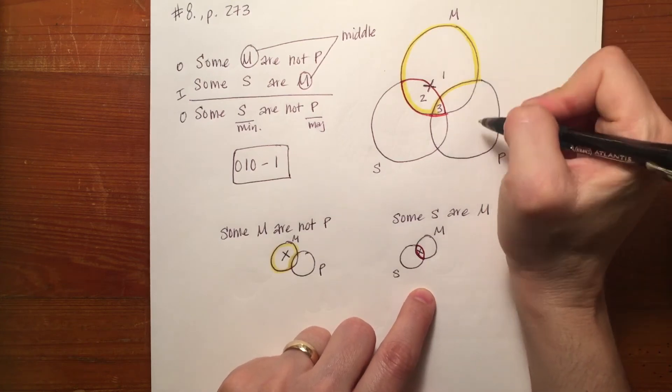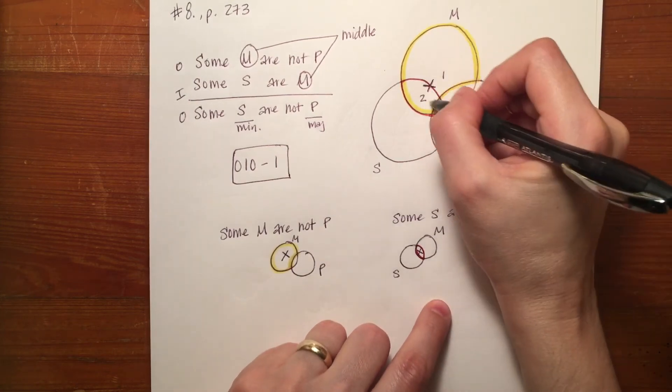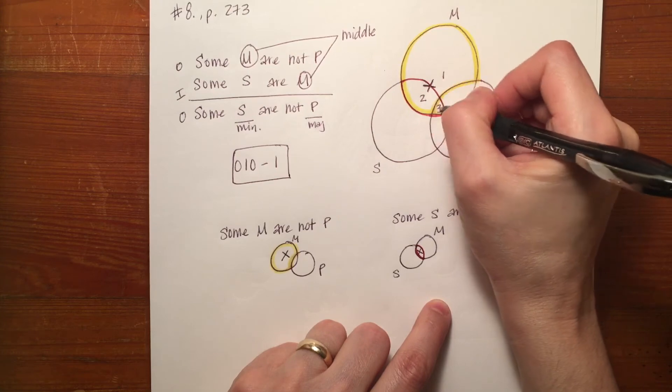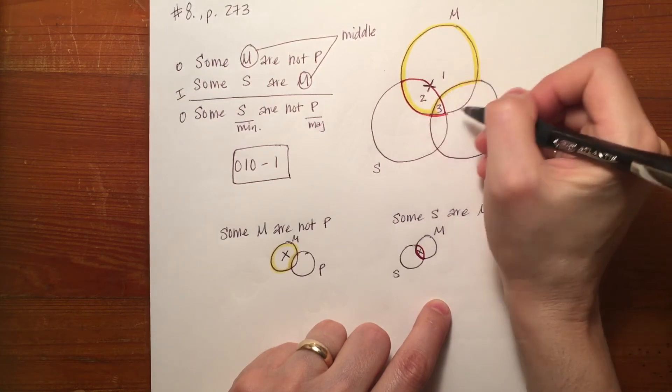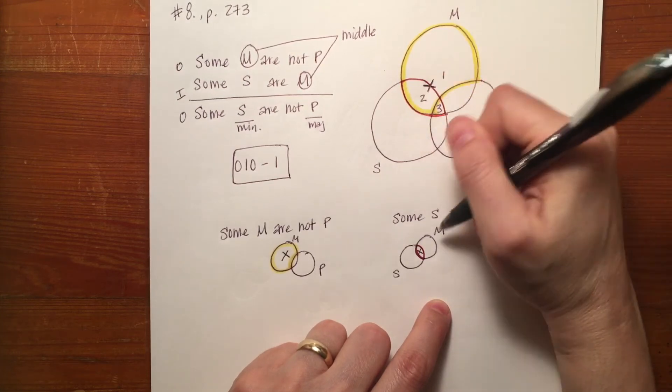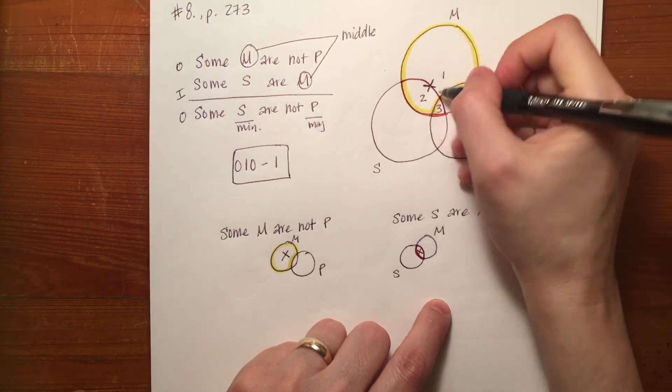So this other P circle isn't important. So what I'm going to do is, because both of these are not shaded, they're open areas two and three in the red area representing some S are M,